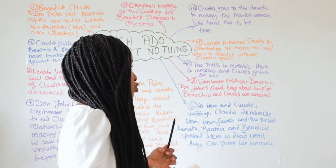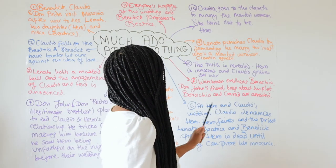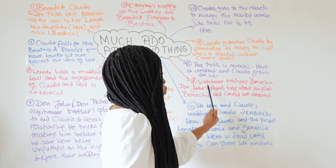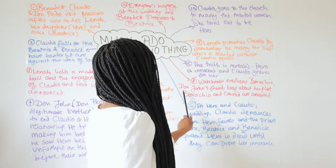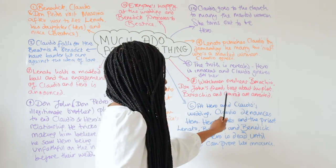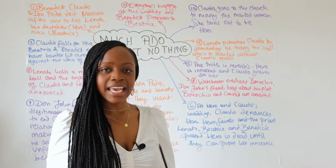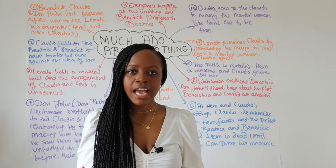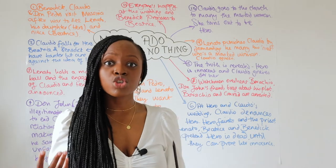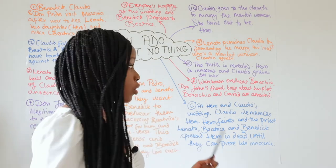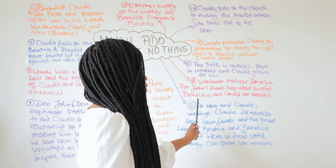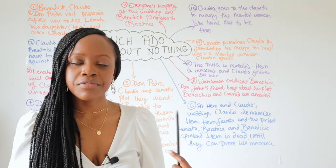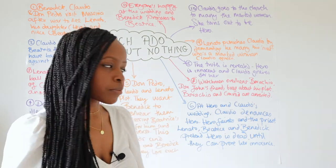Later on, the watchmen overhear Borachio — Don John's friend — bragging about the successful plot and trick that Don John played on Claudio. This leads to Borachio and Conrad being arrested for this wrongdoing.